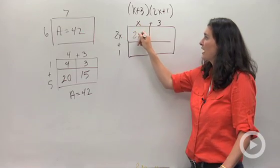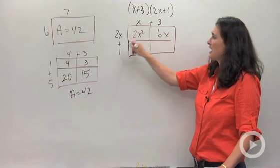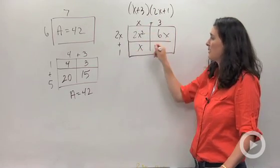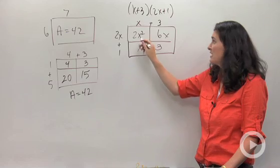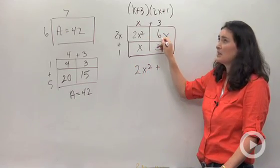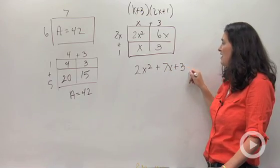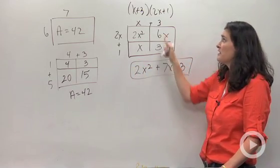Here's what I mean. x times 2x is 2x squared. 3 times 2x is 6x. x times 1 is x. 3 times 1 is 3. So when I add those all together, I'll get 2x squared plus 6x plus x is 7x plus 3. That's the answer for this product.